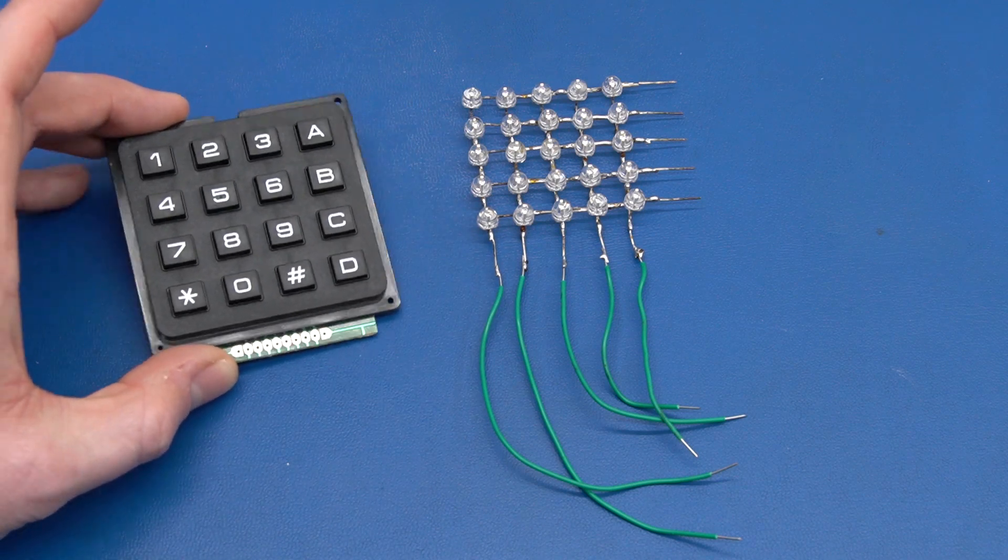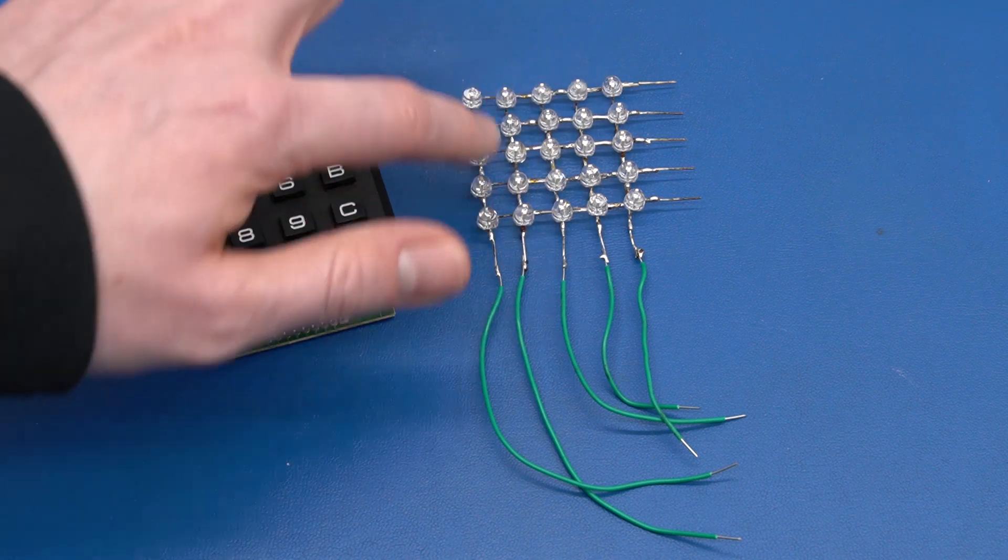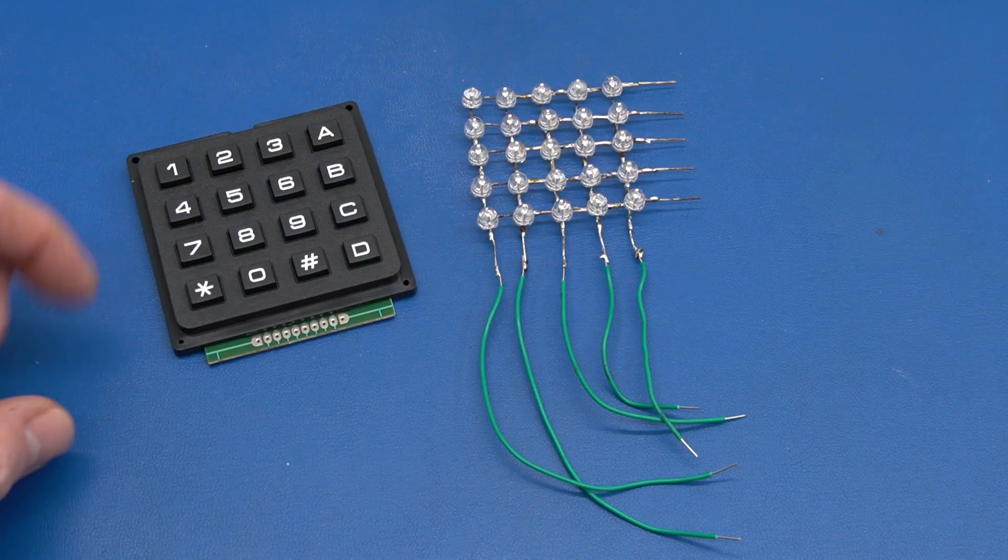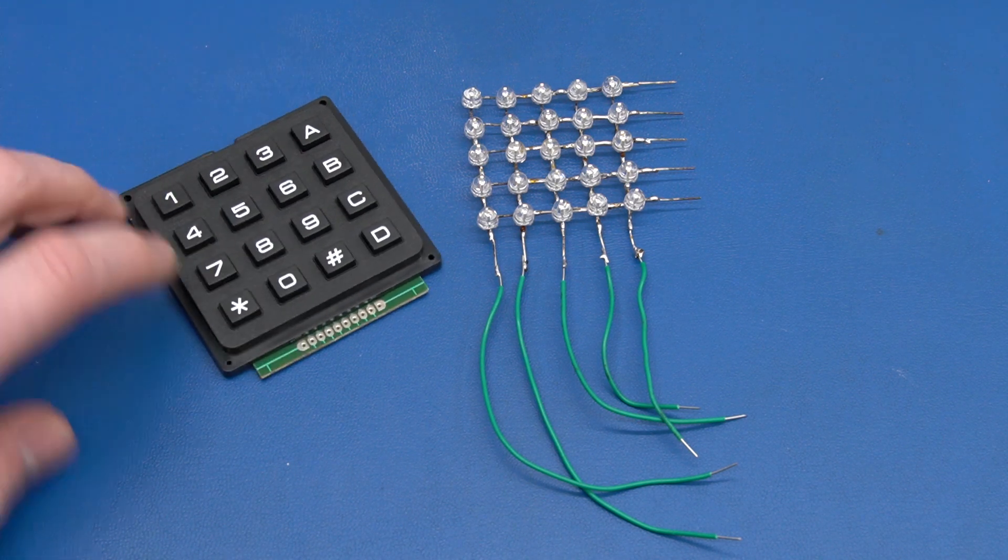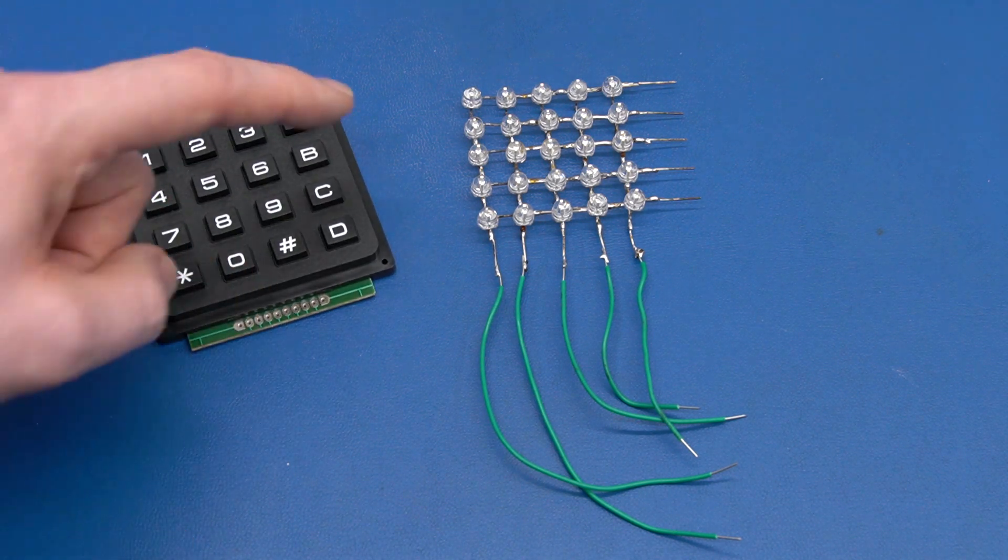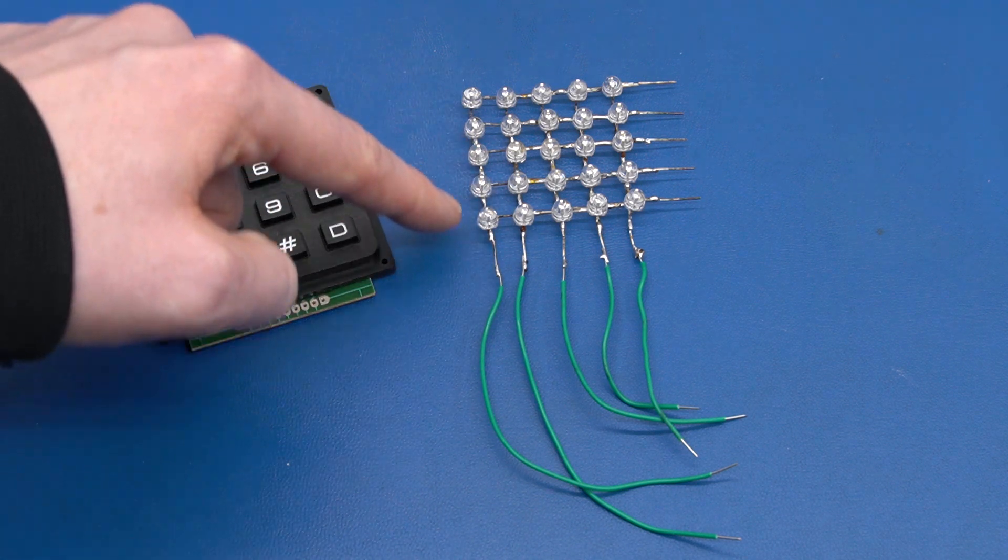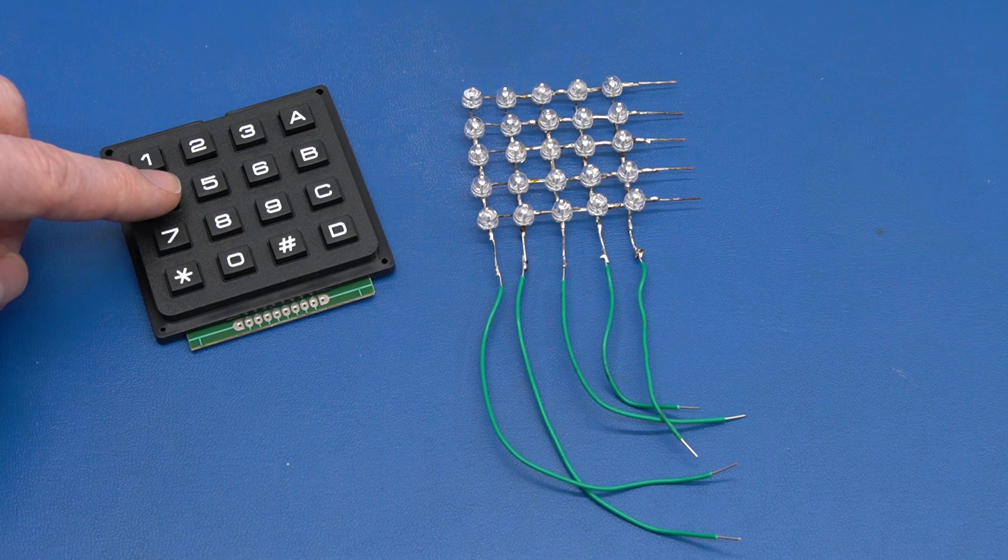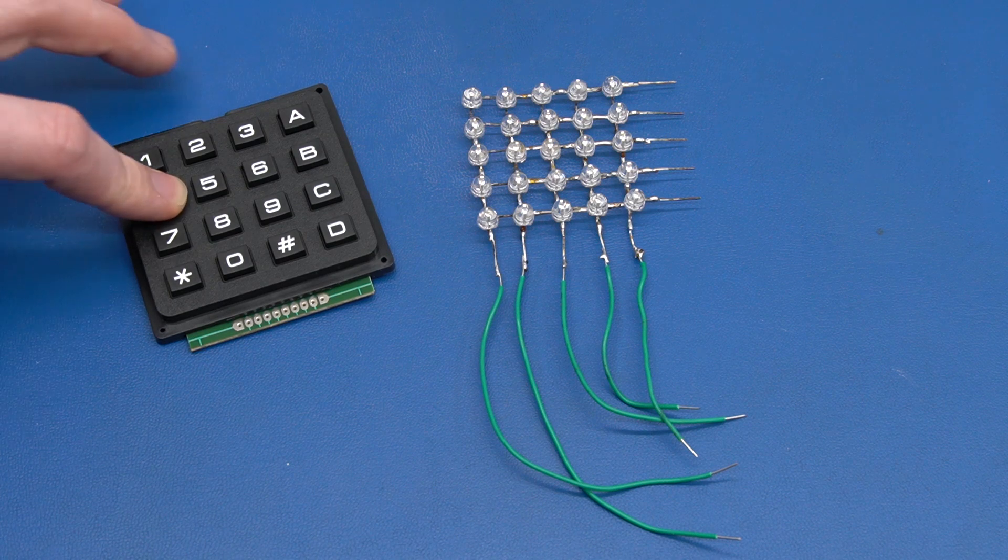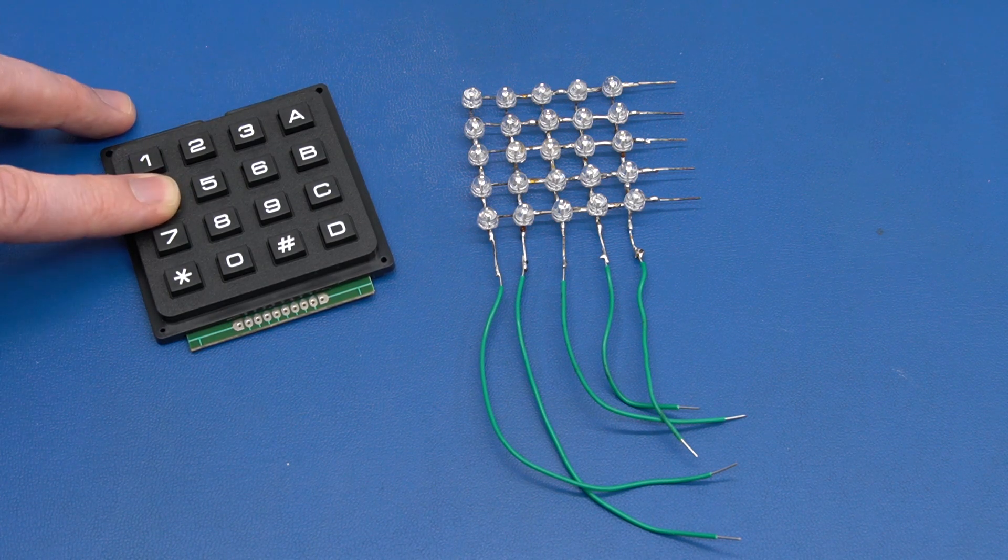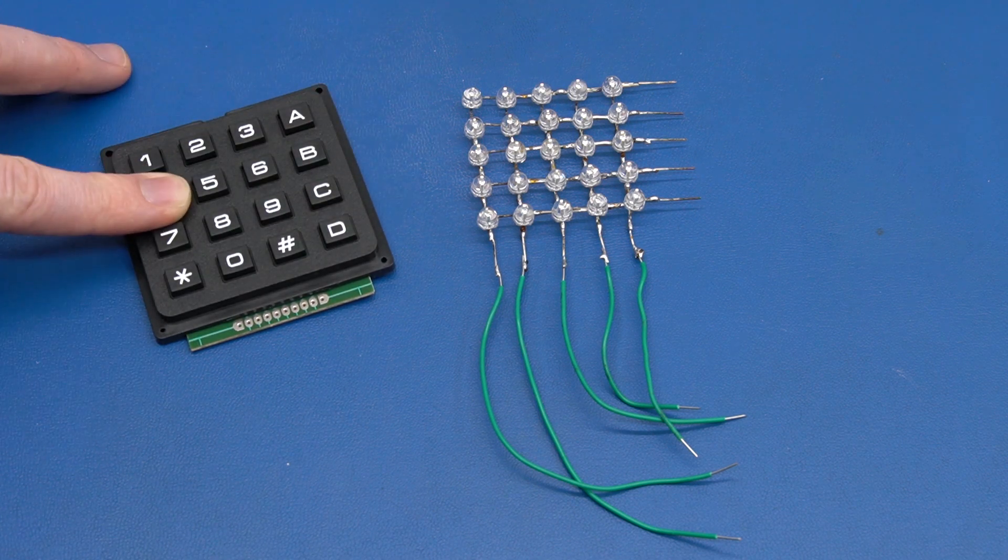We do exactly the same with the keypad, except we don't have to be quite as fast because we're not trying to make an image. We still apply a voltage to the column. But instead of grounding something, we just read the row side here. So if we press 4, it will sweep through the columns and every time it hits 4, this row here will be high and the others will be low.